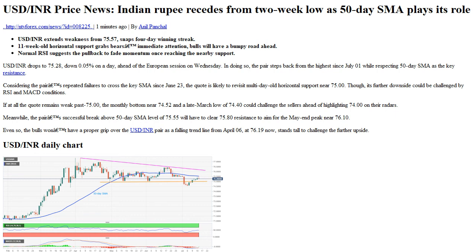Even so, the bulls won't have a proper grip over the USDINR pair, as a falling trend line from April 6 at 76.19 now stands tall to challenge further upside. USDINR daily chart trend: pullback expected.